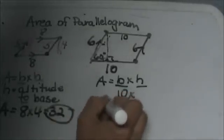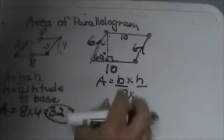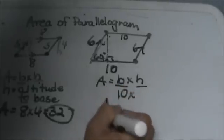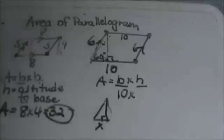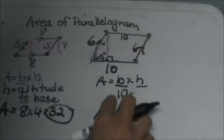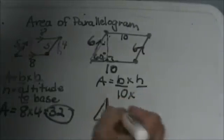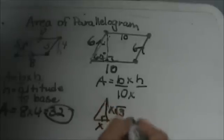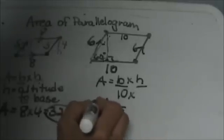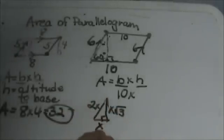The rules for 30-60-90 are as follows. If you have the small leg, we are going to call the small leg x. The long leg is whatever that value is, x times the square root of 3, and the hypotenuse is equal to 2x or double the short leg.